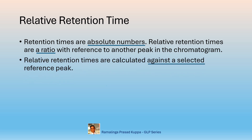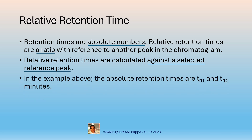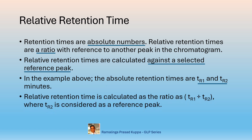Relative retention times are calculated against a selected reference peak. In the same example, your speed is considered as the reference. The absolute retention times are TR1 and TR2 minutes. You can clearly identify the absolute individual retention times of two peaks in the typical USP example from the previous slide. Relative retention time is calculated as the ratio TR1 divided by TR2, where TR2 is considered as the reference peak. So the relative retention time of the first peak is the ratio of the RT of the first peak to the second peak.